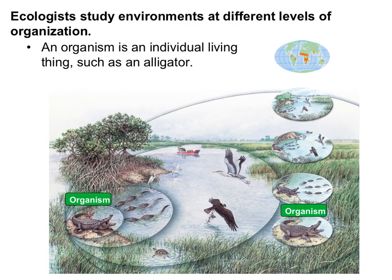There are levels of organization in ecology, and we're going to start by working from the smallest and working our way out to the whole earth. The first level is an organism, and an organism is an individual living thing — like in this picture, there is an alligator.